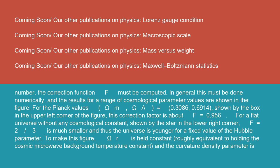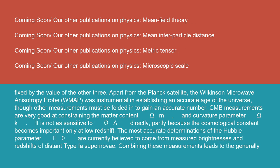For a flat universe, without any cosmological constant, shown by the star in the lower right corner, f equals 2/3 is much smaller, and thus the universe is younger for a fixed value of the Hubble parameter. To make this figure, omega r is held constant, roughly equivalent to holding the cosmic microwave background temperature constant, and the curvature density parameter is fixed by the value of the other three.